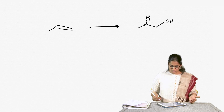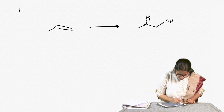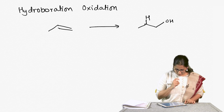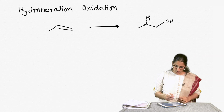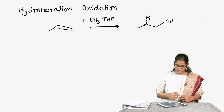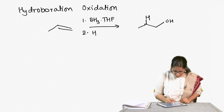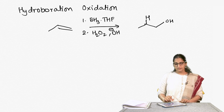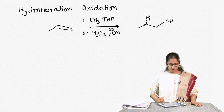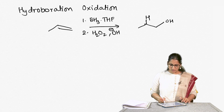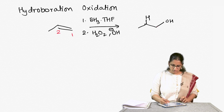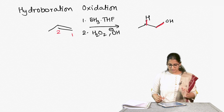We thus need a new reagent — hydroboration-oxidation. The first reagent is BH3 in THF (tetrahydrofuran), and the second step uses H2O2 and OH minus, meaning a base like NaOH and water. When we do this reaction, the OH goes on the less substituted carbon and the hydrogen goes on the more substituted carbon.